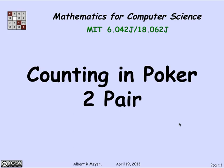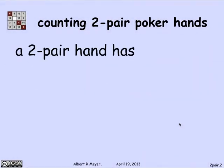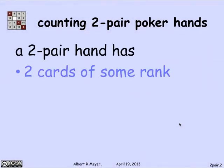Poker is a game where each player is dealt five cards from a deck of 52 cards. The definition of a two pair hand is that there are two cards of some rank. The ranks are ace, deuce, up through king — so there are 13 possible ranks.